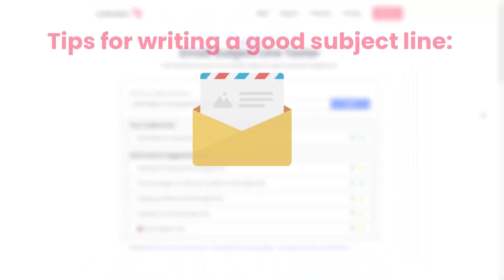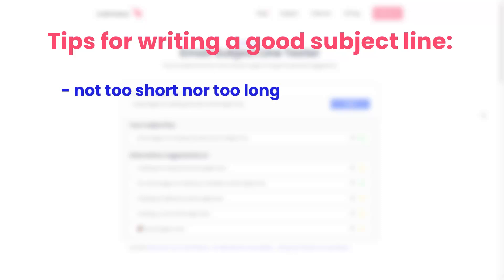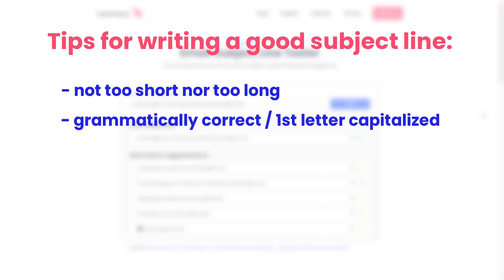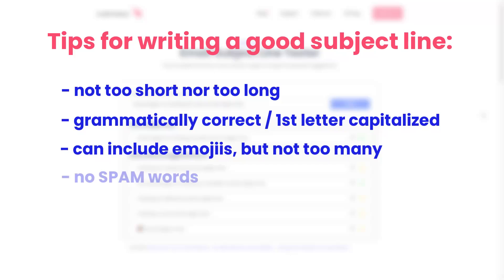A few tips for writing a good subject line: it shouldn't be too short nor too long. It should be grammatically correct with the first letter capitalized and correct punctuation. It can include emojis but there shouldn't be too many. And it shouldn't contain spam words.